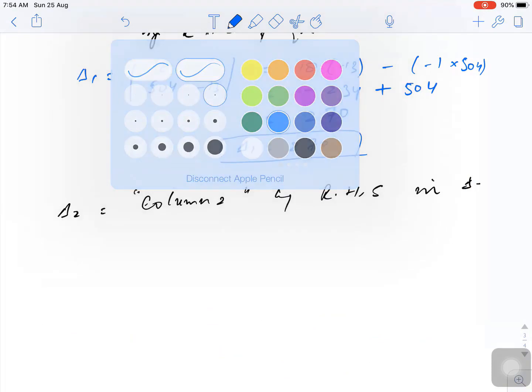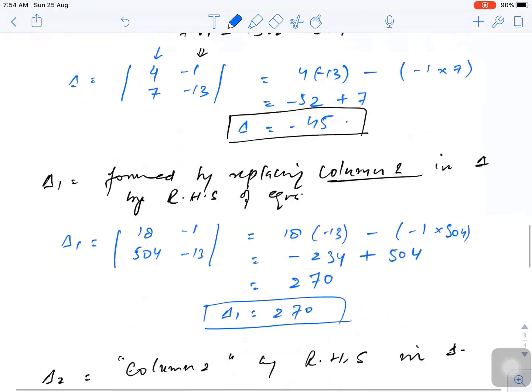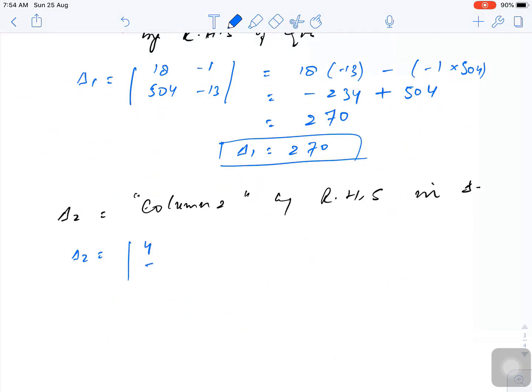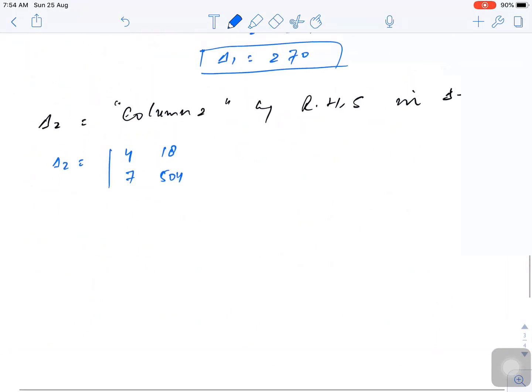So my delta 2 - the first column will remain the same, that is 4 and 7, and we replace the second column with the right hand side. Calculating this gives 2016 minus 126, which equals 1890.